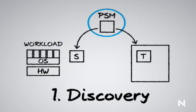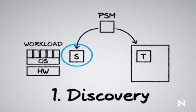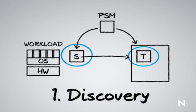The first step is discovery. PlateSpin Migrate is a standalone product that you install on a machine in your data center — it can be on a physical or virtual machine. PlateSpin Migrate needs to know what servers you want to send their data across with: what servers are going to be donating their workload data, and what servers are going to be receiving it. That process of telling PlateSpin Migrate what servers you're interested in is called discovery.